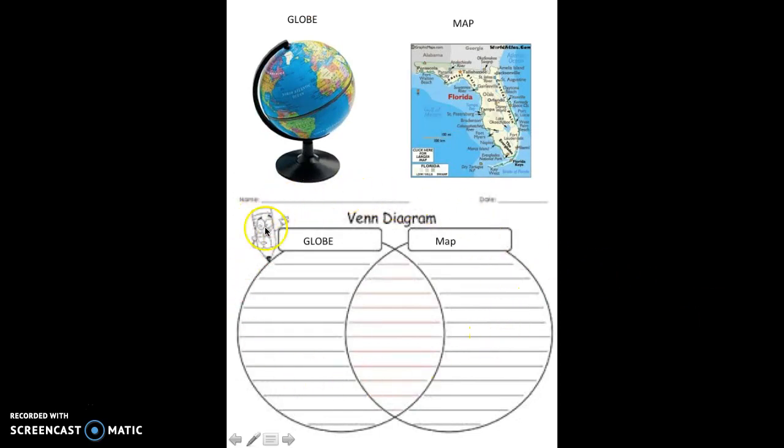Use a Venn diagram when you're wanting to compare pieces of information out of a story or a text that you're reading. For this exercise, we're just going to compare the globe and the map. When you use a Venn diagram, how they are alike are the connection, and that's what we put in the center.